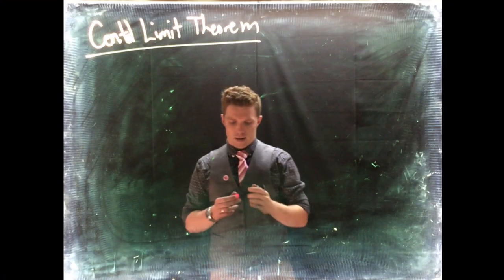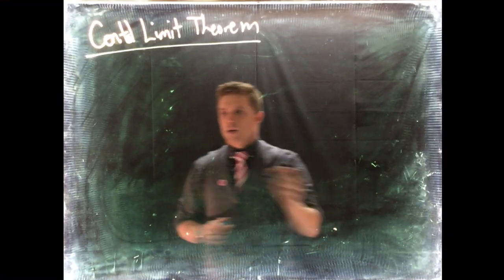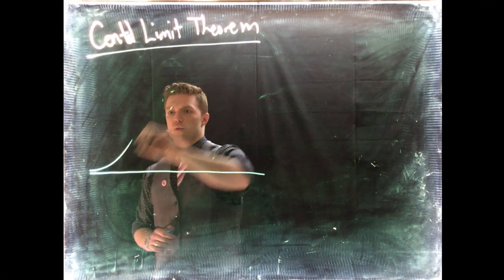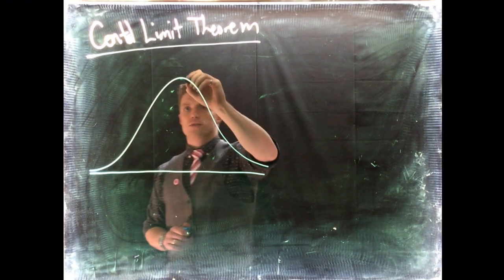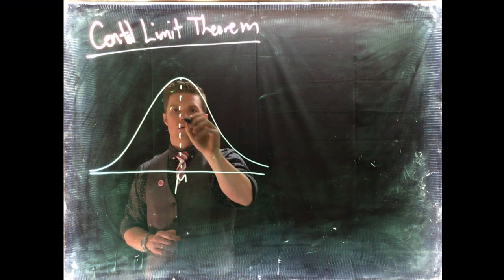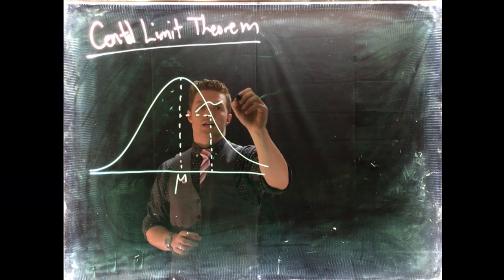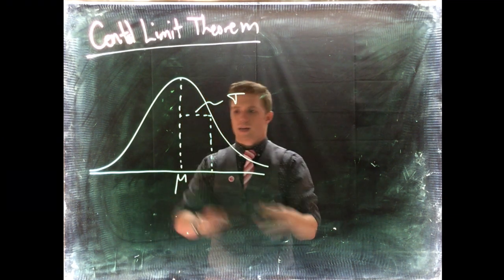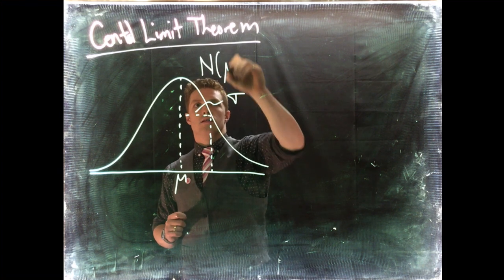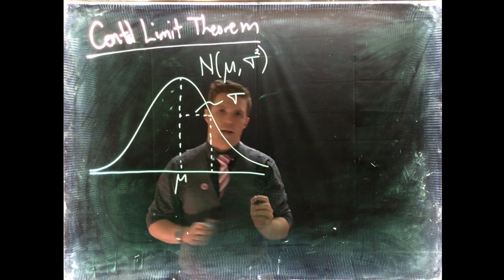We're going to get into this by doing a quick review of our normal distribution. If we remember our normal distribution, we've got some sort of bell curve and in the middle we've got our mu and coming out we've got our standard deviation. If we see it in shorthand it would be something like this: N(mu, sigma squared) because in the shorthand we see it as variance.